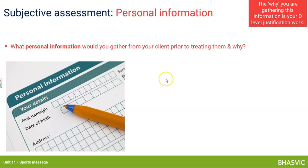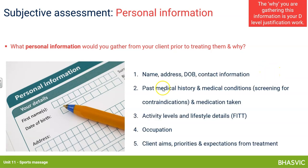Name and date of birth are important as age can impact injuries and recovery. Medical history and medical conditions are essential — you need to screen for any contraindications, reasons why you shouldn't treat them, and know about any medication, as certain medications can influence treatment. You need to make sure you're not going to cause harm. It's also valuable to know their activity levels, lifestyle, how often they exercise, what type of exercise, and their occupation — whether it's active or sedentary.